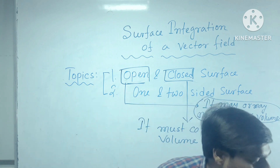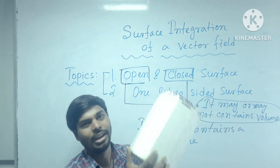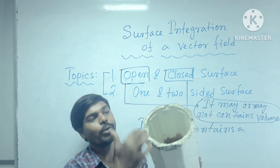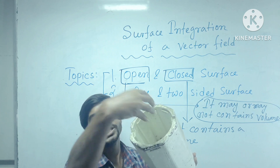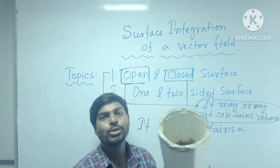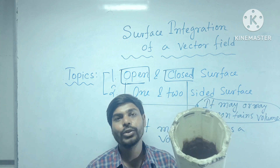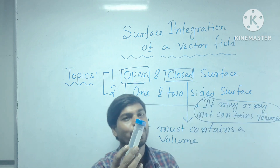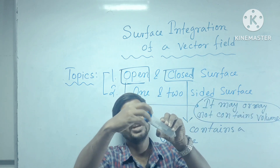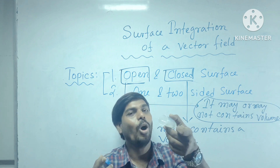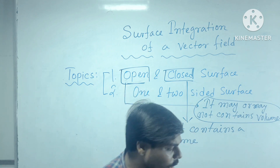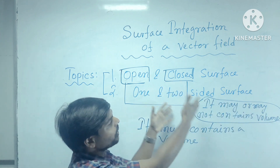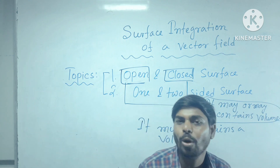Let us take another very beautiful example. If I consider this container, you can find that at the top of the container there is open space — there is an opening. So this is an example of open surface. Similarly, if I take this centrifuge tube and open it from the top, it becomes an example of open surface.